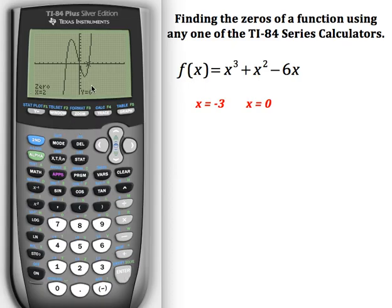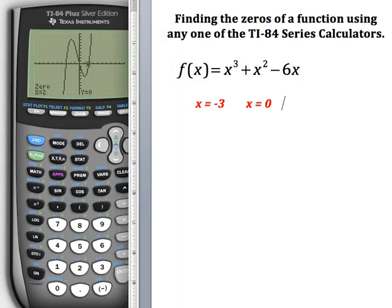And it clearly shows me my last zero is at x equals two, and when y equals zero. So my third zero for this function is x equals two.